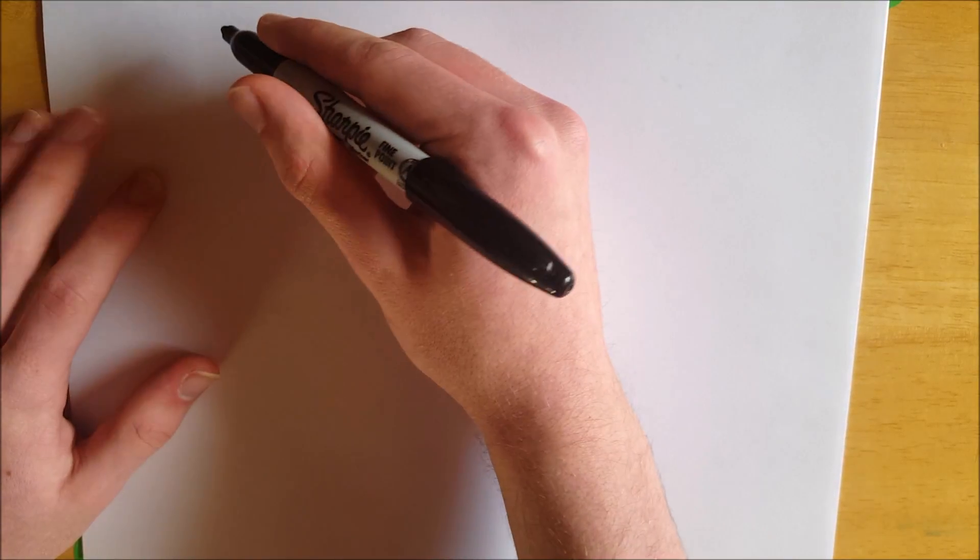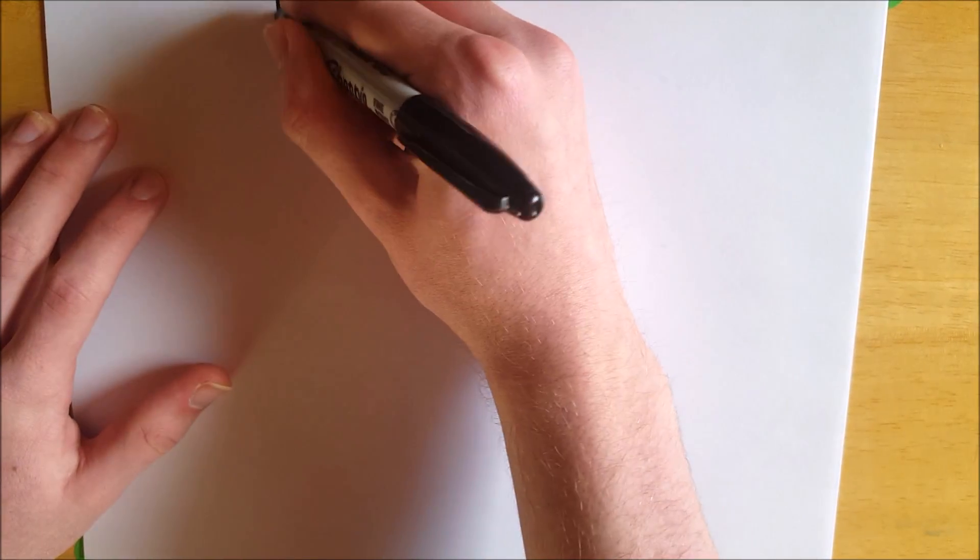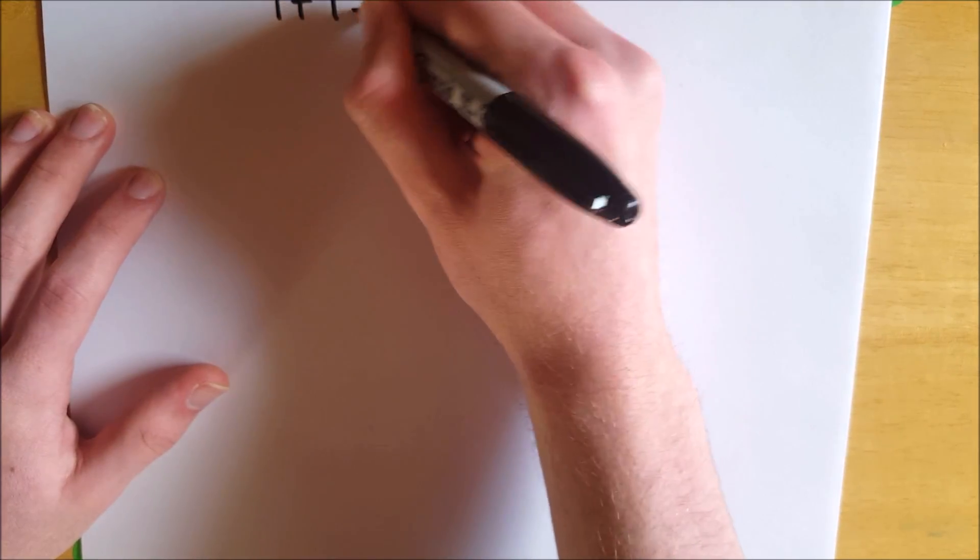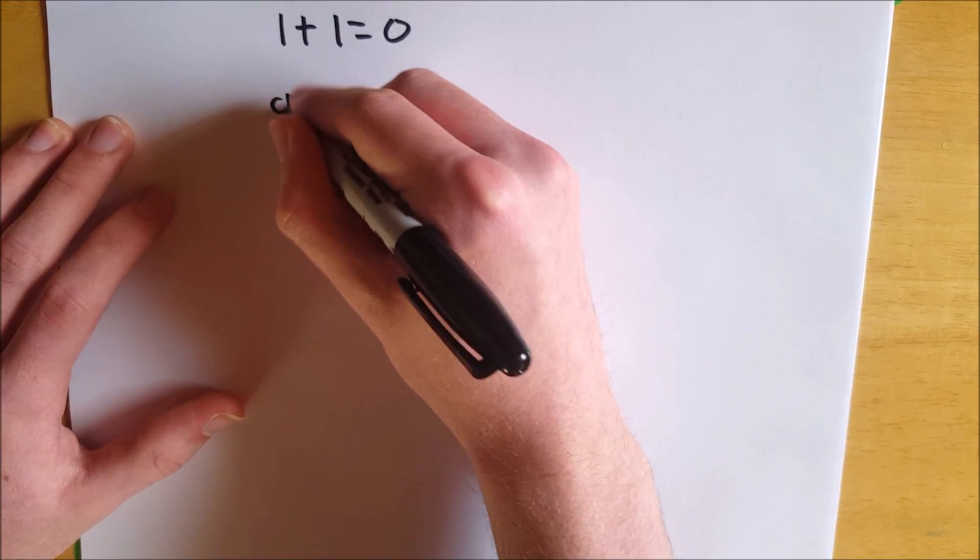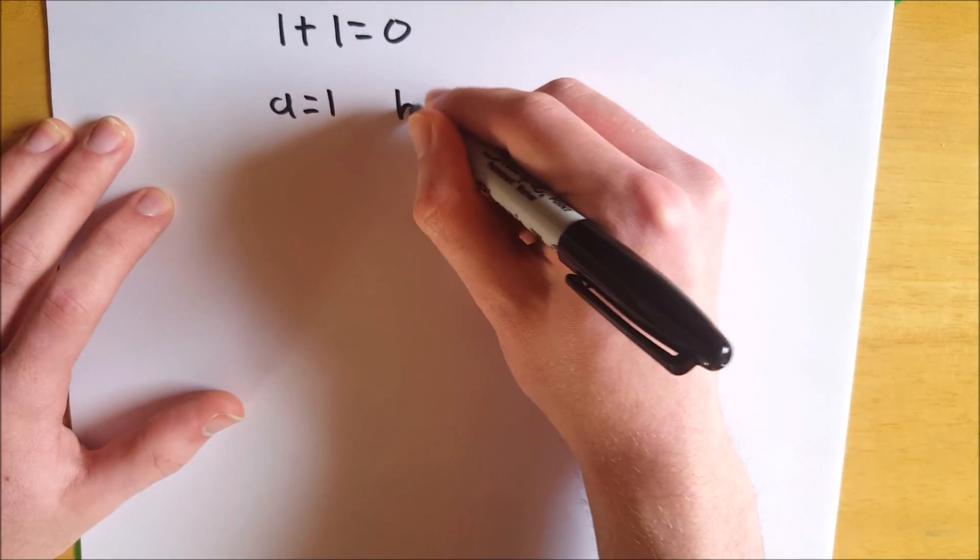So first, let me give you the proof, and perhaps you're familiar with it, maybe you can spot the error yourself while I write out the proof. So we're going to suppose, of course, what we're trying to prove is that 1 plus 1 equals 0. I'll bring that down a little bit.